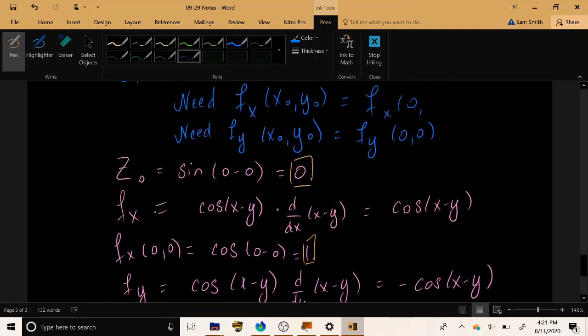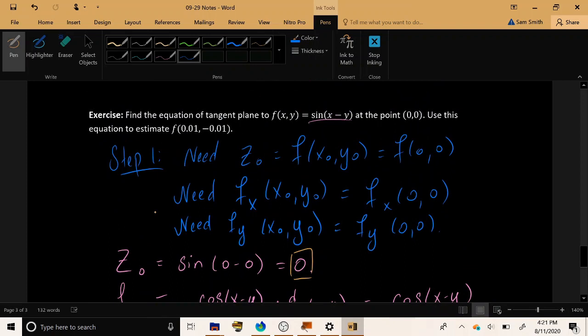Now some of you may have already anticipated that was going to happen. If you spend a lot of time studying physics already, you're probably pretty familiar with the law of small angles, which says that if the input of sine is very small, then you can essentially just take the sign off and get almost the exact same value with the sign on as with the sign off.